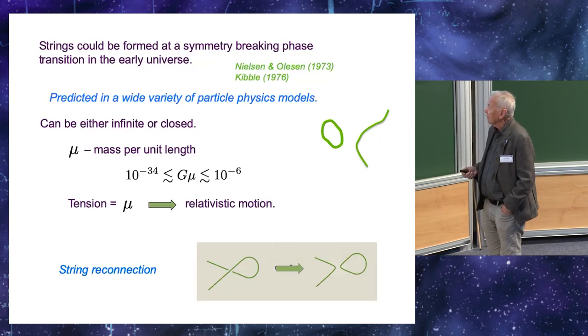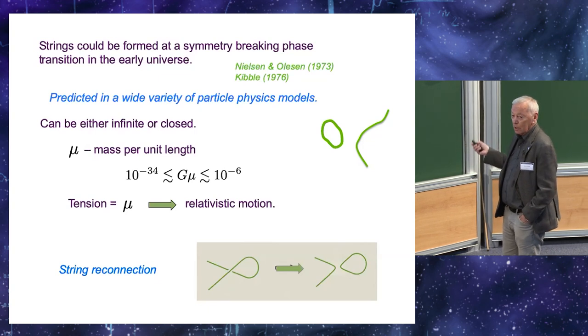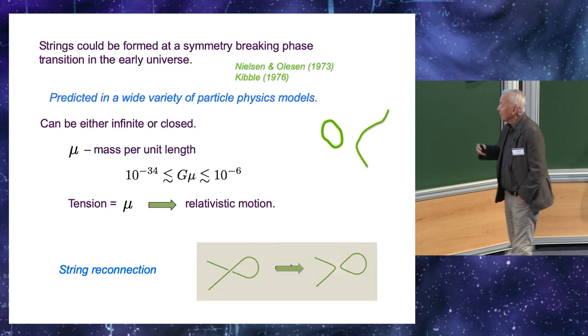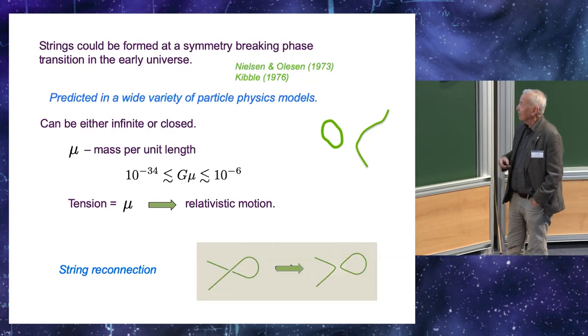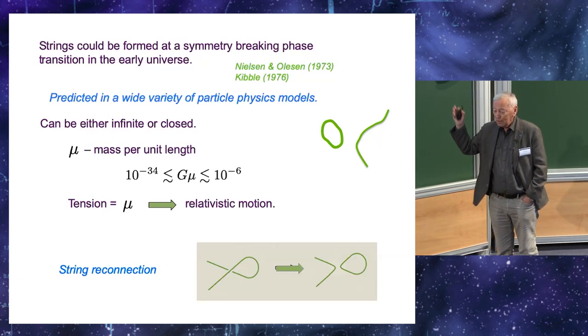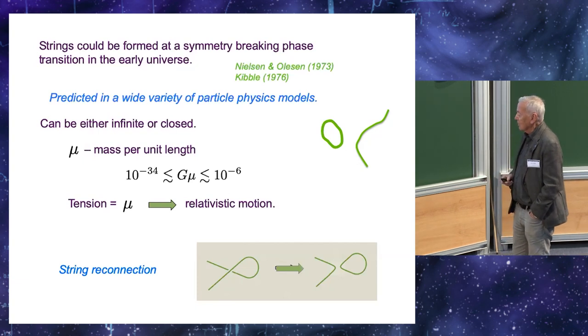A convenient dimensionless combination is G mu, where G is Newton's constant. And if the symmetry breaking scale varies between electroweak and grand unification, this parameter G mu varies in this huge range from 10 to the minus 34 to 10 to the minus 6.